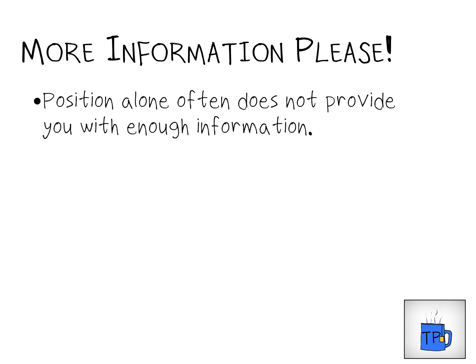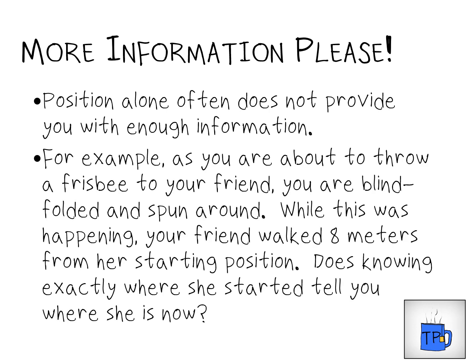Sometimes even position does not provide enough information for the scenario at hand. You're back out in the field about to throw your Frisbee to a friend. You've got your eye on your friend, Frisbee ready to be released. Then somebody puts a blindfold over you and spins you around. As you're being spun around, your friend sneaks off in a new direction, eight meters away from where she started. When you stop spinning, the friend says your Frisbee target is now eight meters away from where she started. Is that enough information to know where to throw the Frisbee? No — even though you knew where she started and how far she moved, you don't know the direction she moved, so you still can't throw the Frisbee accurately.